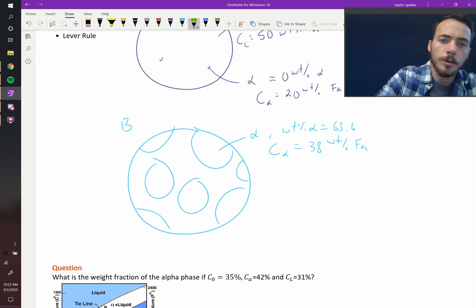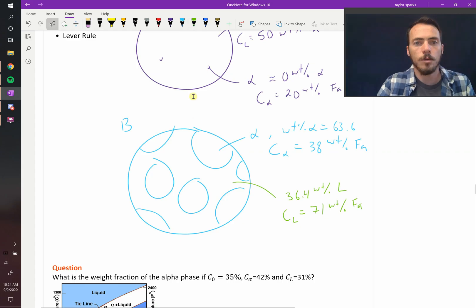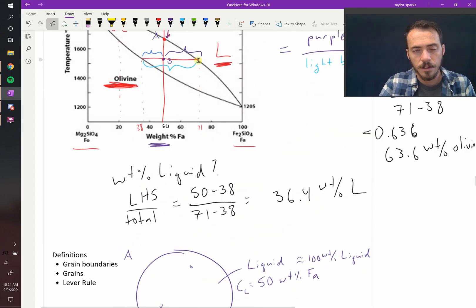Okay, and then for liquid, we would do it as well. We'd say, okay, we have 36.4 weight percent liquid. And the composition of our liquid is 71 weight percent pheolite. And again, we knew that it was 71 because that's where the tie line intersected the liquidus. And then we drop that down and see where it's at. Is this making sense? Let's do one more.